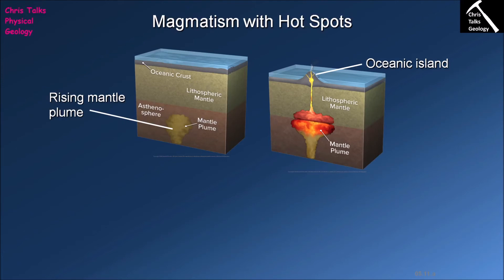This is obviously different to the types of volcanically active ocean islands associated with ocean-ocean convergent plate boundaries, because those volcanic islands will typically erupt intermediate magmas. So we can see there's a compositional difference between volcanic islands associated with hotspots and volcanic islands associated with ocean-ocean convergent boundaries.